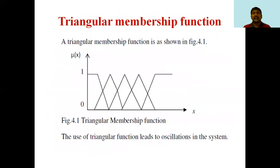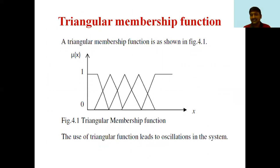If the membership function value is 0, it is called zero membership. If the value is equal to 1, it is called complete membership. If the value is between 0 and 1, it is called partial membership. The most popular shapes of membership functions are triangular, trapezoidal, and bell-shaped, chosen because of their simple description as functions and minimum usage of memory for storage and manipulation.